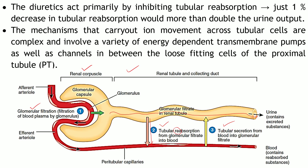There is one more process: tubular secretion, where some constituents may get secreted out into the filtrate. Now, 99 percent of whatever is filtered gets reabsorbed back to blood circulation. So, if 100 percent represents the filtrate, and 99 percent returns to blood, just 1 percent of the filtrate gets converted into urine. The amount of urine is very small compared to the amount filtered.